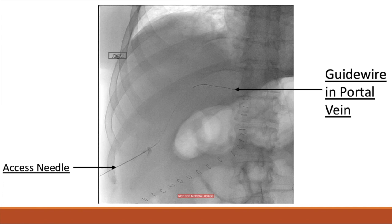A 0.018-gauge guidewire is advanced through the needle into the portal system under fluoroscopy. In this image, we see the guidewire leaving the access needle and traversing the portal system — in this case, going from the right portal vein to the left portal vein.